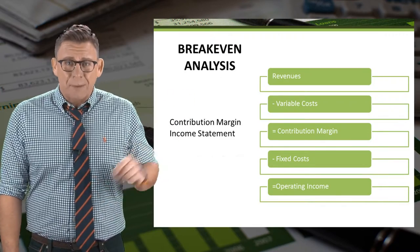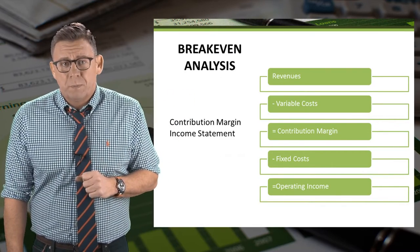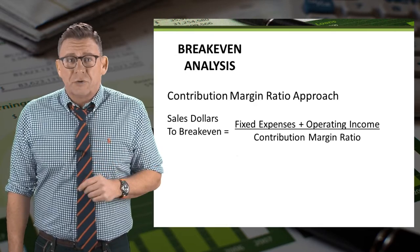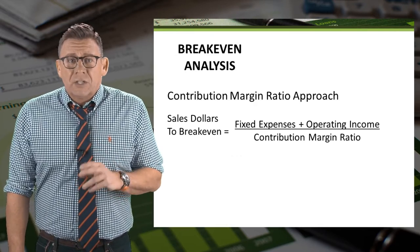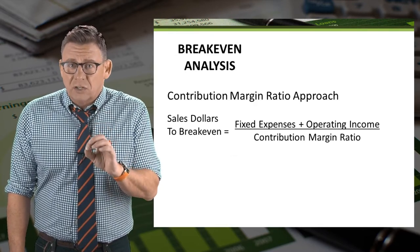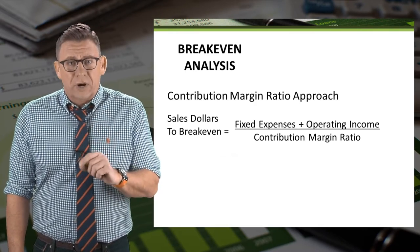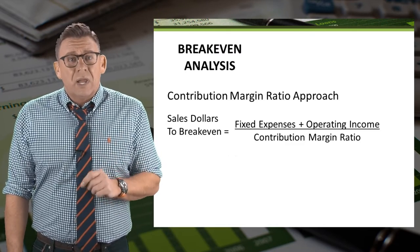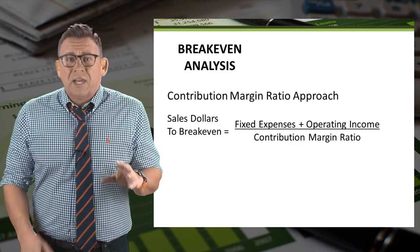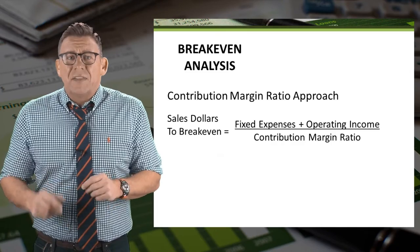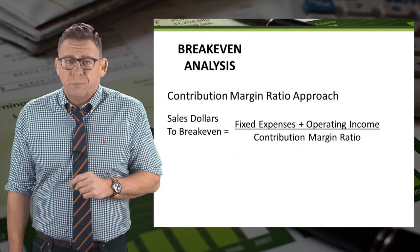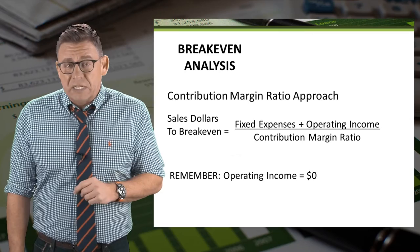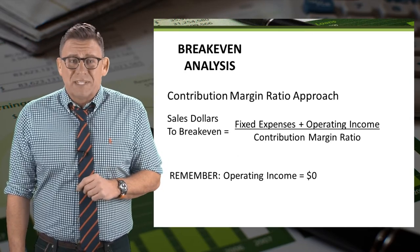Here's an example of a contribution margin income statement. The shortcut formula to calculate the sales dollars to breakeven is: fixed costs plus target income, divided by the contribution margin ratio. Remember that to break even means that operating income is zero.